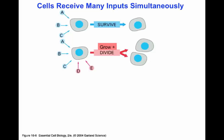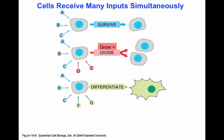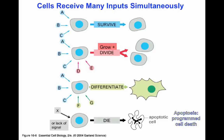Switching to other signals — instead of D and E, now receiving F and G — will have a different effect: the cell will be turned to differentiate. Last, either receiving a completely different signal, or a lack of signal altogether, may signal the cell to die by apoptosis. Apoptosis is programmed cell death — a genetic program that gets activated to commit cellular suicide. Different signals may have different phenotypes when the cell interprets that information.